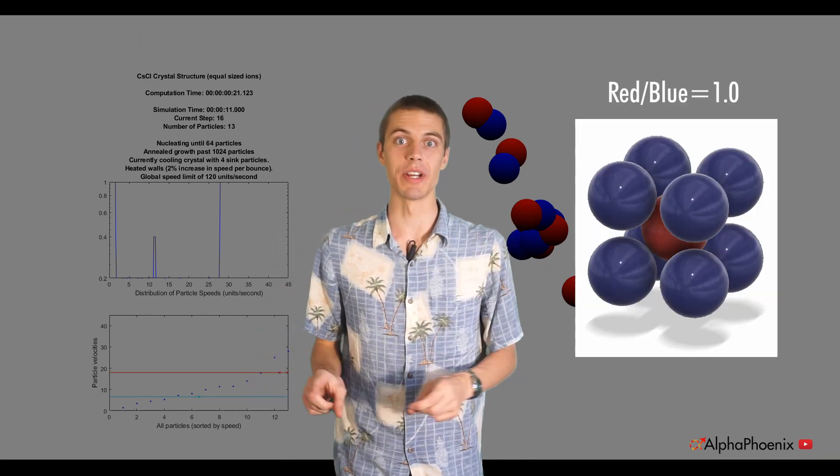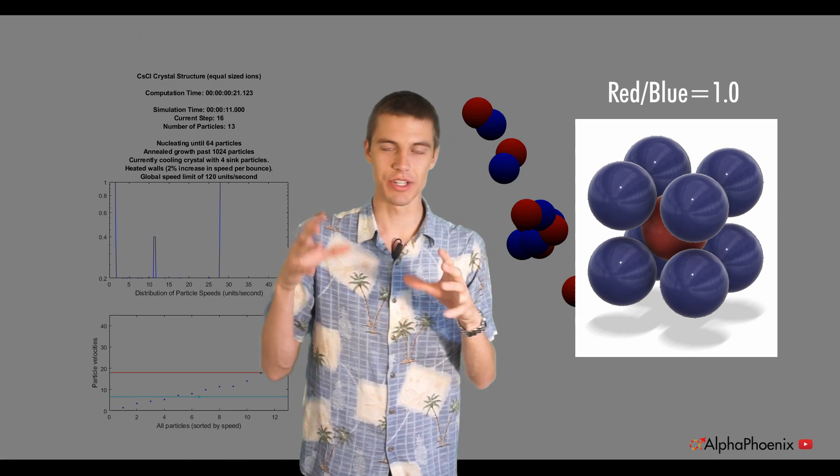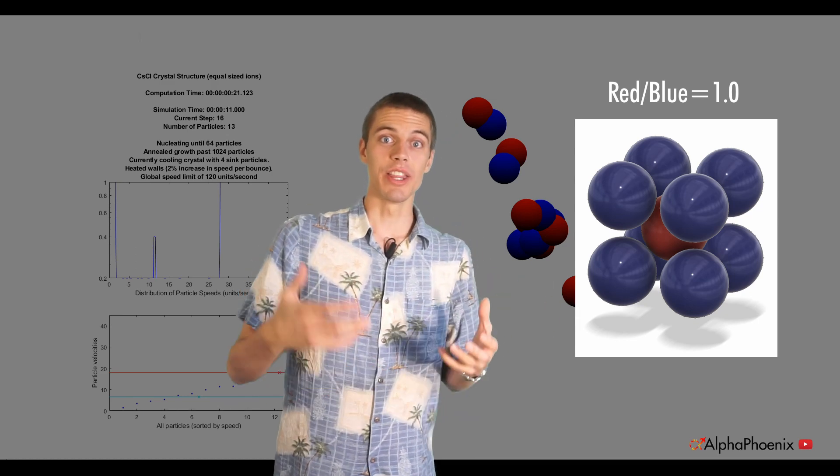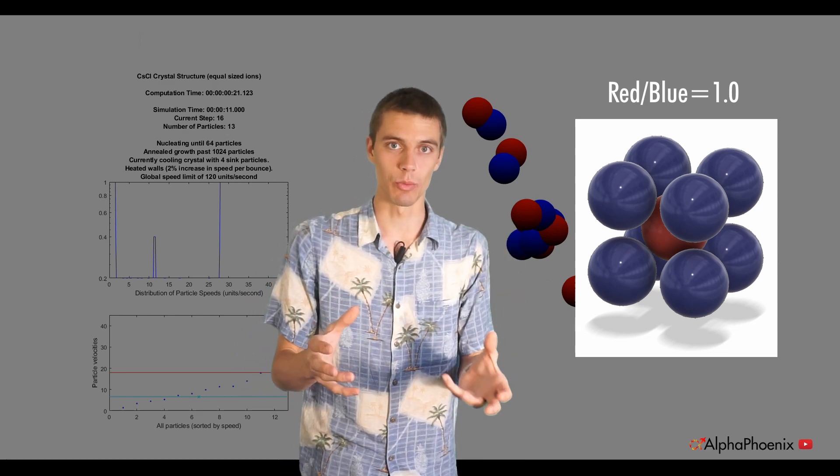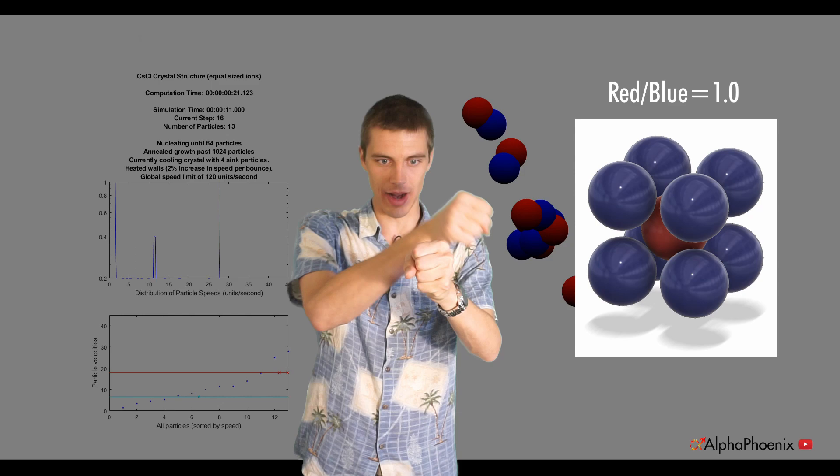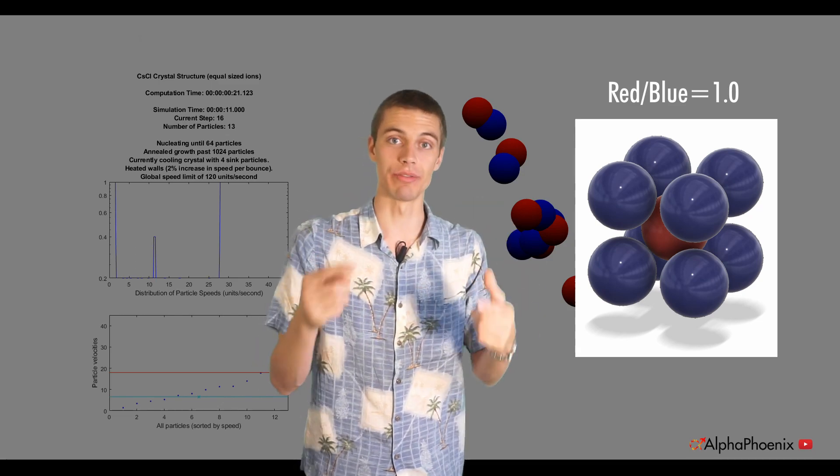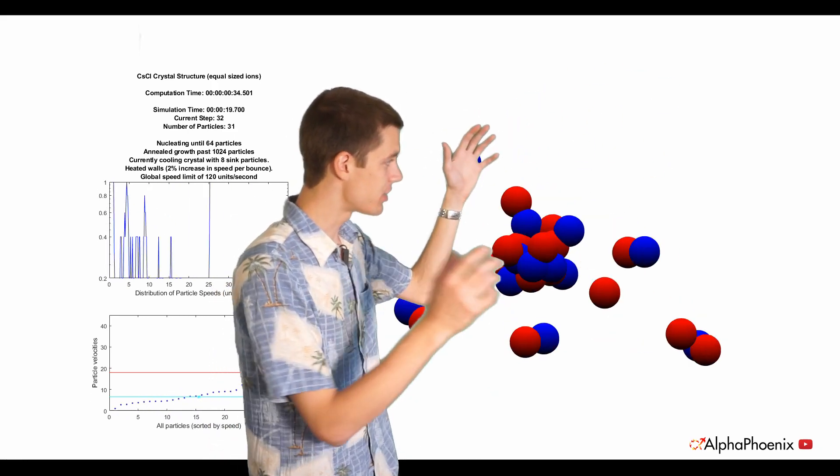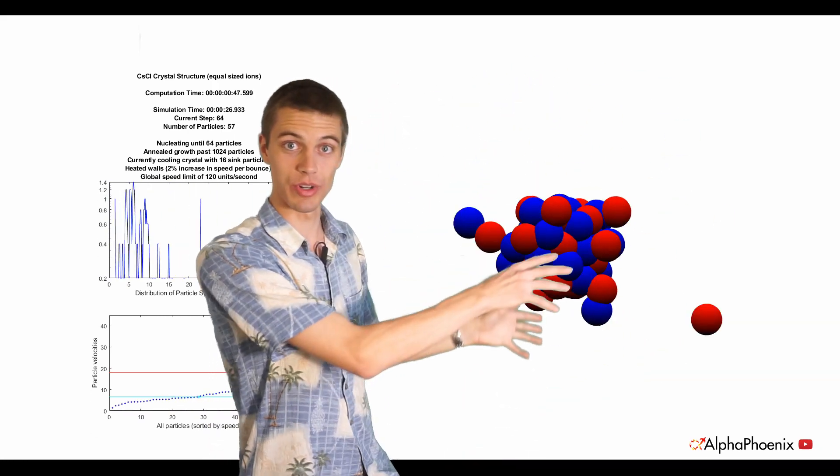For simplicity, I went with equal sized ions. So there's a one-to-one radius ratio. The red spheres are just as big as the blue spheres. And that means that we could predict that we would have a cubic structure where every unit cube is a red atom surrounded by eight blue atoms that make up the corners of that cube.